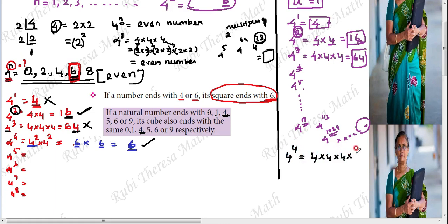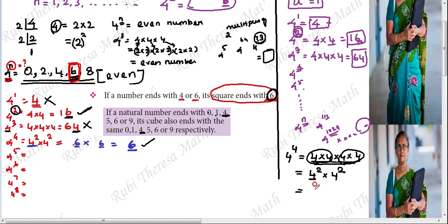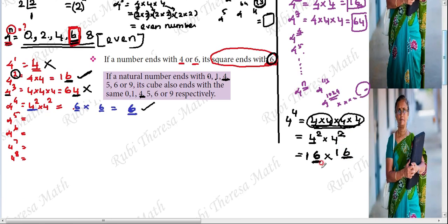For any number with ones place digit 4, its square ends with 6. So 4 power 2: 4 times 4 is 16, the ones place is 6. Since 4 squared ends with 6, once we know the ones place is 6, any further multiplication of 6 by 6 gives 36, so the ones place stays 6.